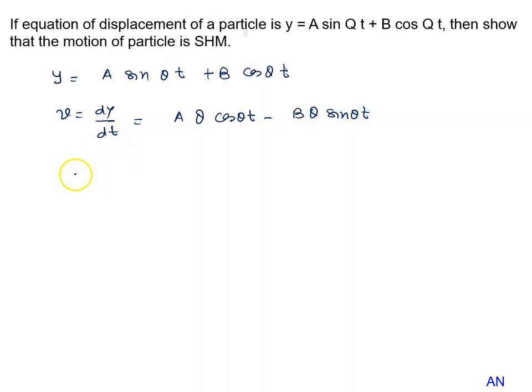Again differentiation for the acceleration. A Q cos Q t becomes minus sin Q t, Q comes out again, so it's squared.